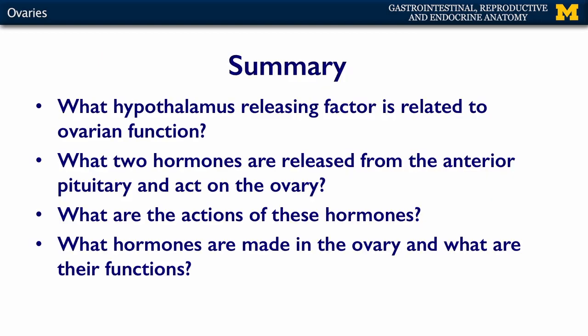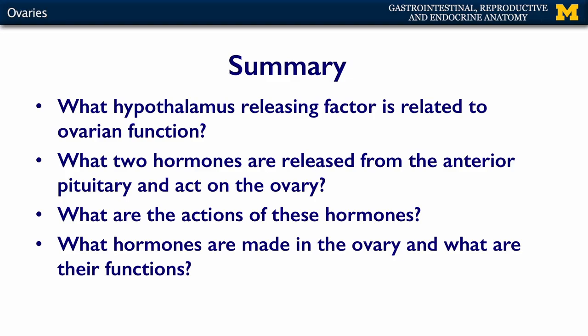In summary, understand what hypothalamic releasing factor is related to ovarian function, what two hormones are released from the anterior pituitary and act on the ovary, what their actions are on the different parts of the ovary, and what four hormones are made in the ovary and their functions once secreted into circulation. Once you have a grasp on these concepts, you'll be ready for the assessment.